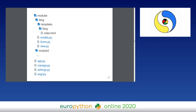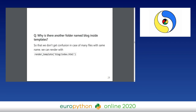Inside the templates folder there is another folder called blog — same as the module name. You might wonder why. It's because when Flask looks for index.html and finds several files with that name, it won't return what you expect. But if you add a folder named blog as a namespace, you can refer to the specific template as blog/index.html, which makes it clear which file you're pointing to.